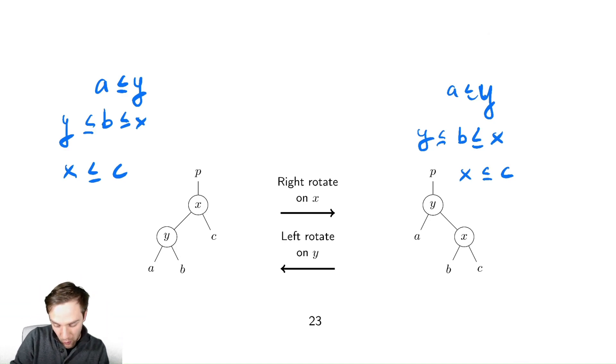In a left rotation, I'm moving y down to be the left child of x, so it goes from being the parent of x to the left child of x. And then we need to move around the pointers as well. You could do the exact same sort of thing and convince yourself that it is working. So let's look at the code for what we're doing here.